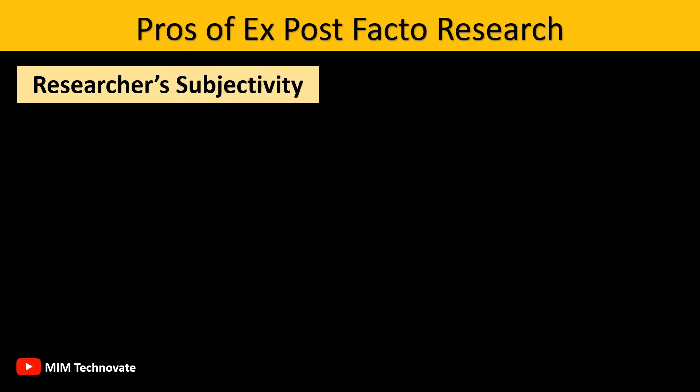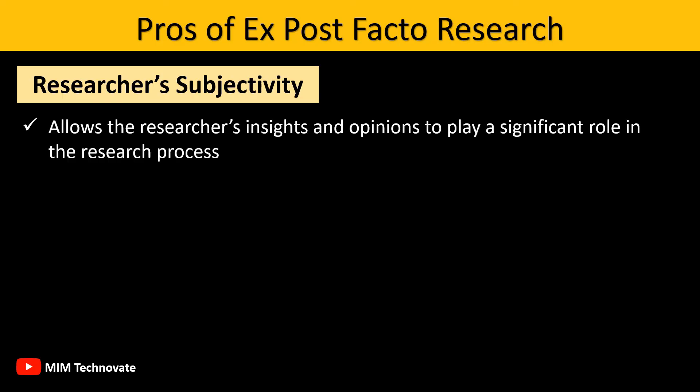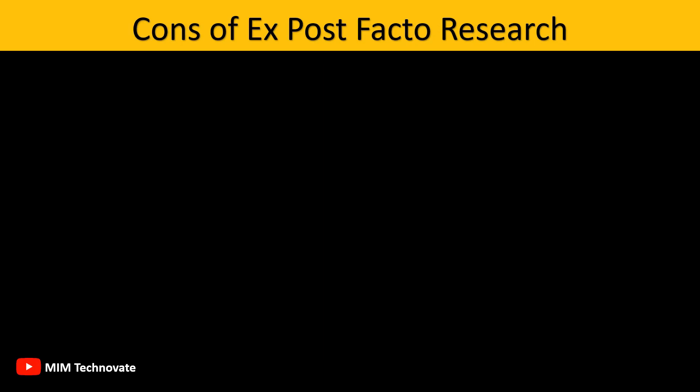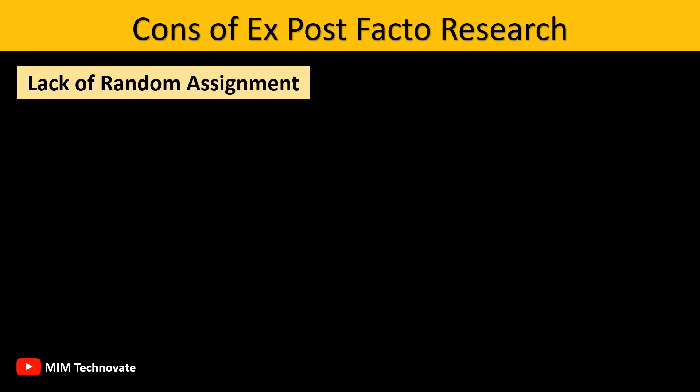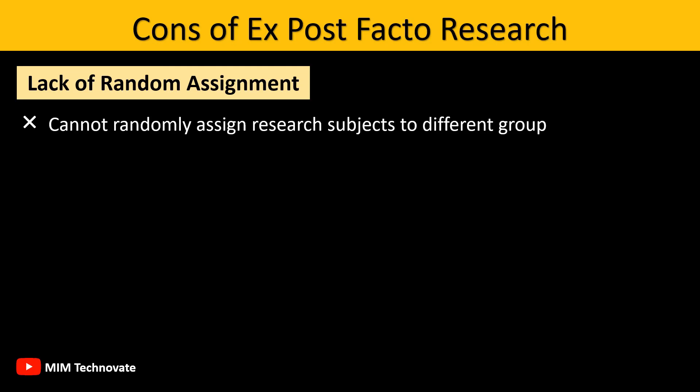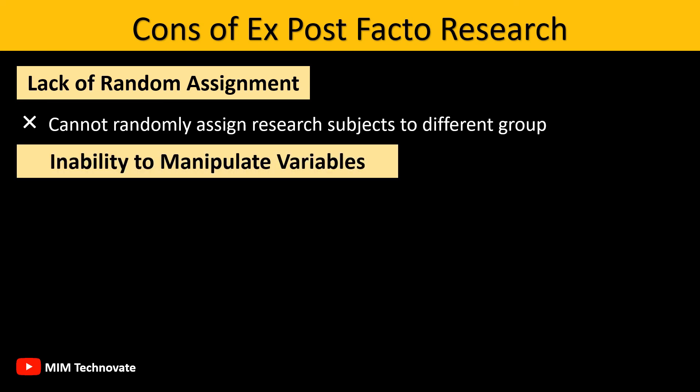Researcher's Subjectivity: Ex-Post-Facto Research allows the researcher's insights and opinions to play an important role in the research process. Now let's learn about the cons of Ex-Post-Facto Research. Lack of Random Assignment: Researchers cannot randomly assign research subjects to different groups, which limits their control over variables. Inability to Manipulate Variables: Since the variables cannot be manipulated, researchers must work with existing data or conditions.